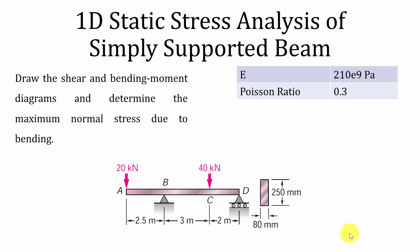Hello all, welcome to the ANSYS tutorials. In this video I am going to show you how to perform the 1D static structural analysis of a simply supported beam. The beam is simply supported at point B and it is roller supported at point D. The material properties and cross section are given. We are asked to calculate the shear force and bending moment diagrams and the maximum normal stress.